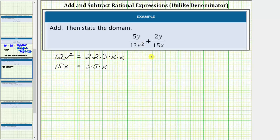And now let's build the least common denominator. To begin, the least common denominator must contain all of the factors of the first denominator. And therefore the LCD must contain two factors of 2, a factor of 3, and two factors of x.